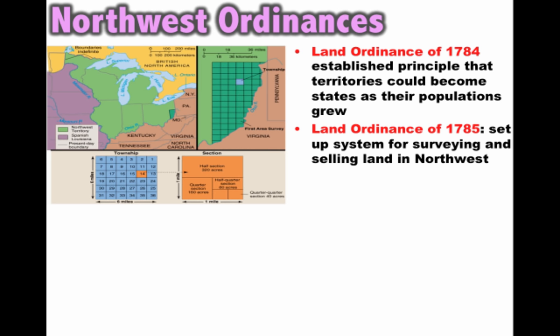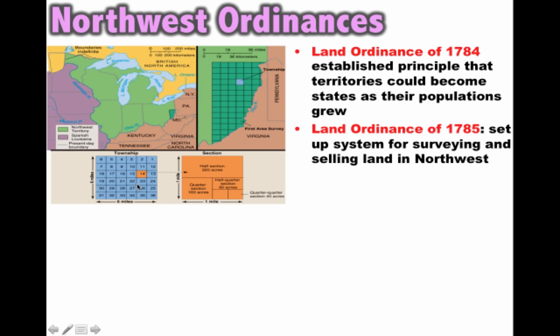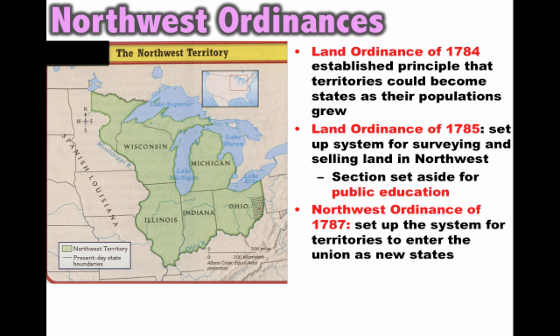Under the Land Ordinance of 1785, it sets up a system for surveying the land and selling that land in the Northwest. They would survey the land and divide it up into townships. An important part of the Ordinance of 1785 was that one section of the land would be set aside for public education — a pretty progressive idea at the time for the government to be setting aside land for public education.